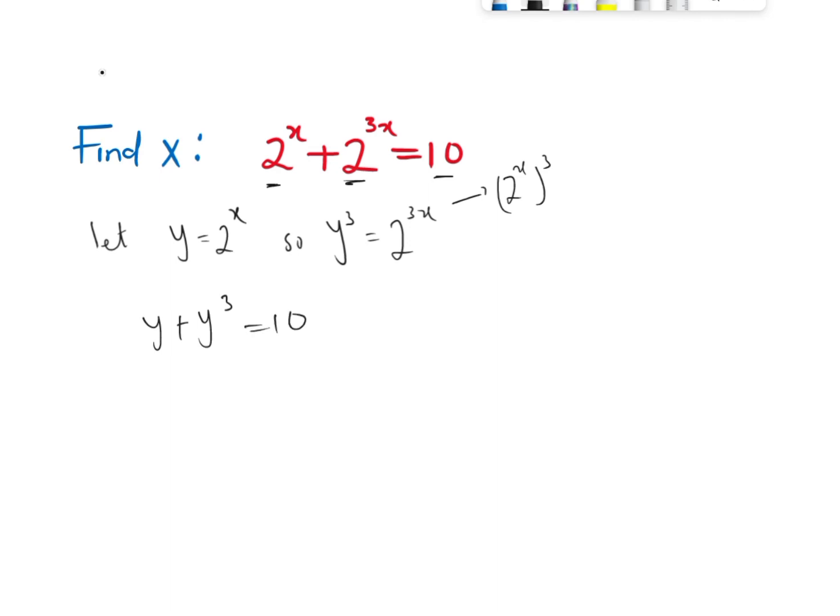From here, we can form an equation which is y raised to the power 3 plus y minus 10 equals 0. And let my plus y be equal to minus 4y plus 5y. So which is the same thing as plus 1y. We can use any other value, but for the purpose of this, I'm using these two.